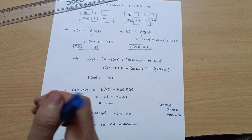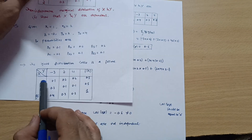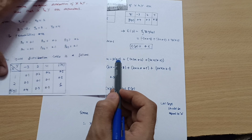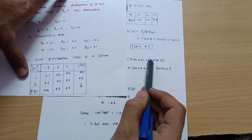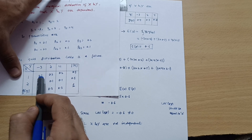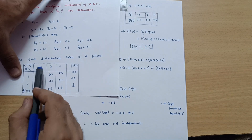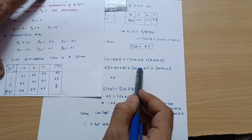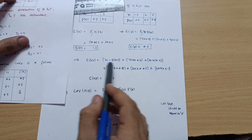For E(XY), multiply each combination of x, y, and its joint probability: 1×(−3)×0.1 + 1×2×0.2 + 1×4×0.2 + 2×(−3)×0.3 + 2×2×0.1 + 2×4×0.1. Calculating all these terms gives E(XY) = 0.3.